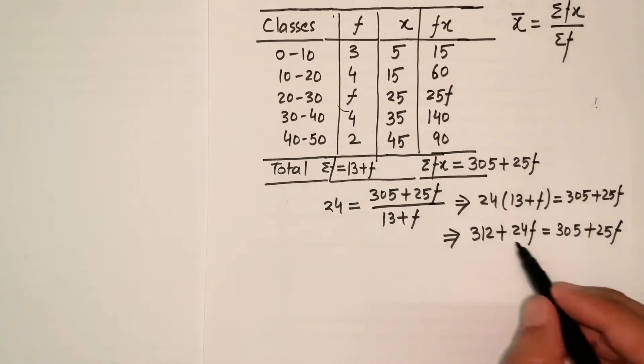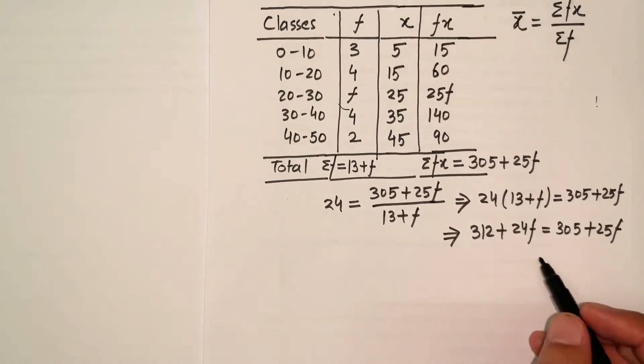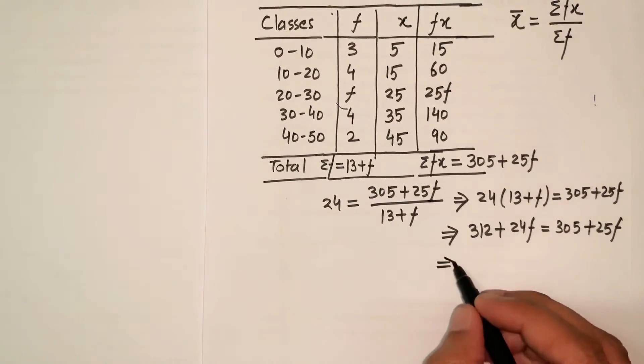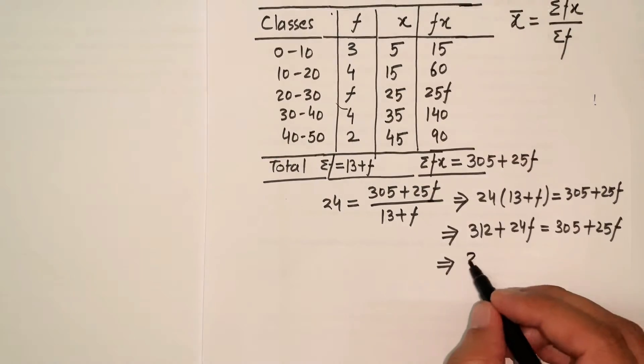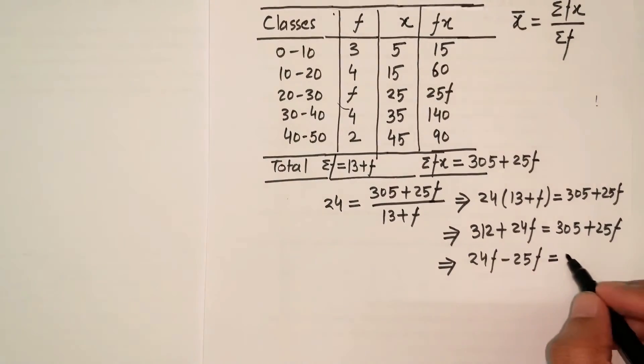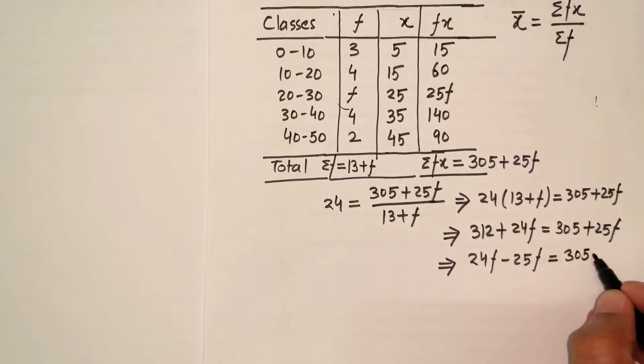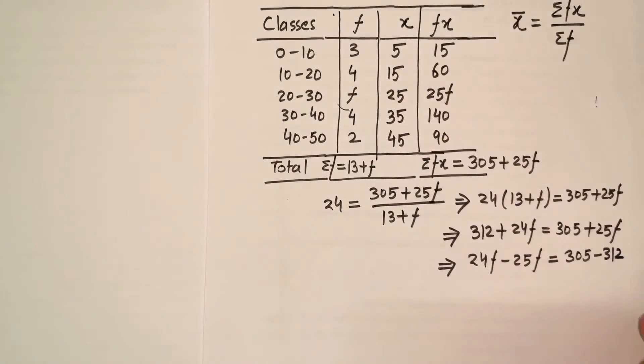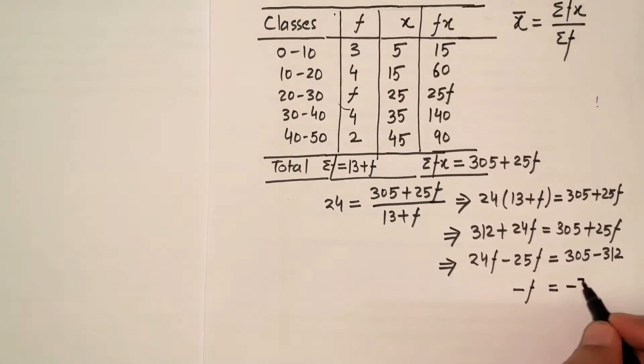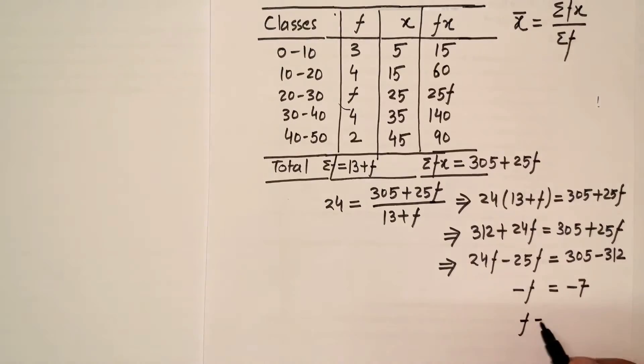I'll take f terms on one side, the unknown terms, and the numerical terms on one side. So this becomes 24f minus 25f equals 305 minus 312. So this is -1f equals -7. That gets cancelled out and f equals 7.